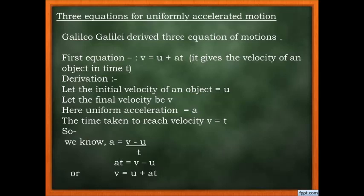The derivation of the equations is easy, but needs 3–4 times of practice. The three equations are small and must be memorised. The first equation of motion is: v = u + at, where v is final velocity, u is initial velocity, a is acceleration, and t is time. Through this equation, you can find velocity at a given time t.